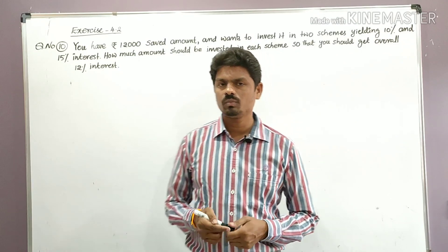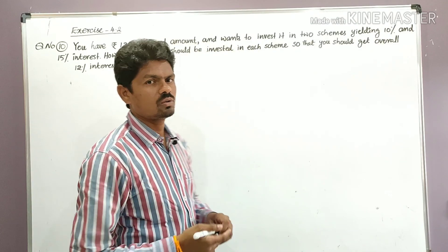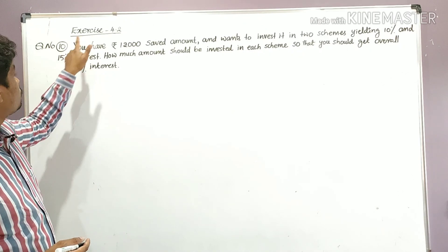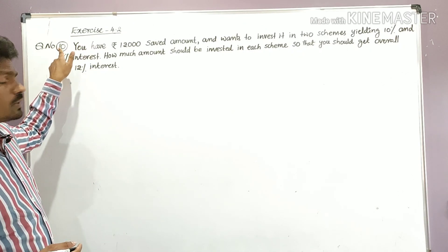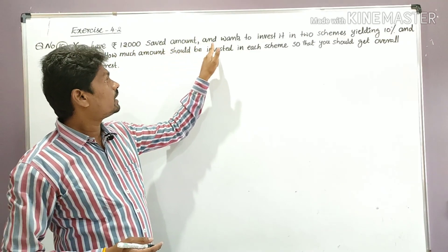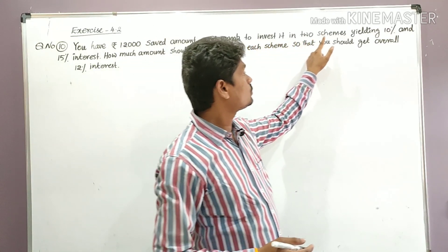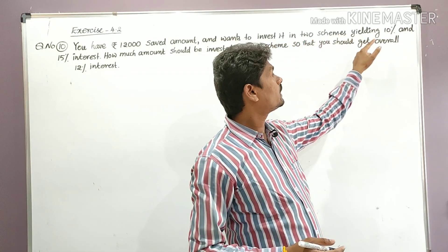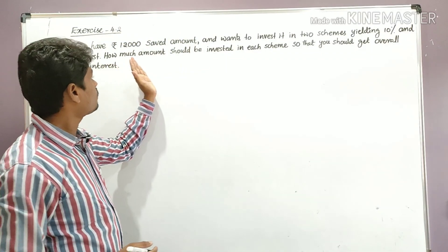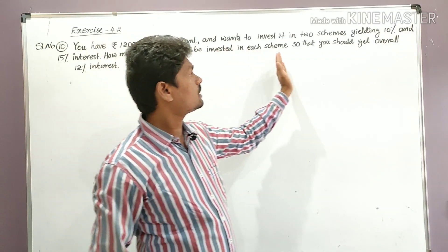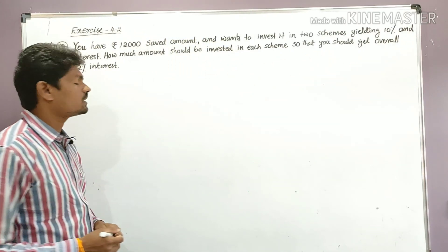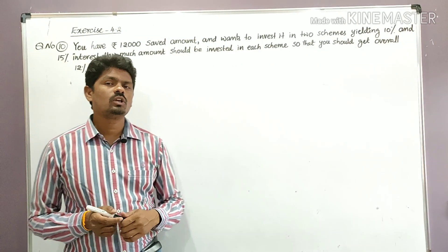Now for the 10th problem in Exercise 4.2: You have rupees 12,000 saved and want to invest it in two schemes yielding 10 percent and 15 percent interest. How much amount should be invested in each scheme so that you get an overall 12 percent interest?